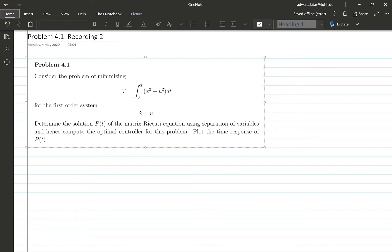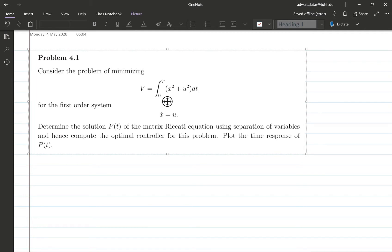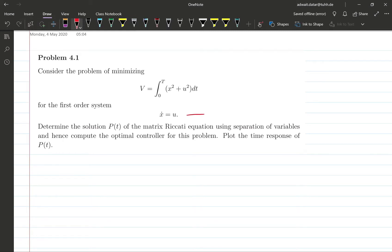Problem 4.1 can be seen on the screen now. It's basically an LQR problem where the dynamics are just single integrator dynamics and the initial condition is given. This is a finite horizon problem because T is fixed and finite.